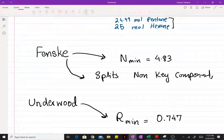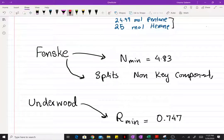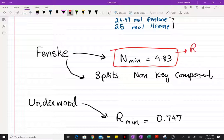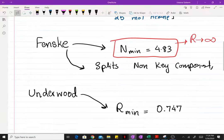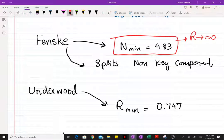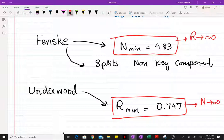And when you're operating at minimum reflux ratio, the number of stages is going to go to infinity. So you have to decide, and you have to decide an optimum reflux ratio that's going to be economically feasible.